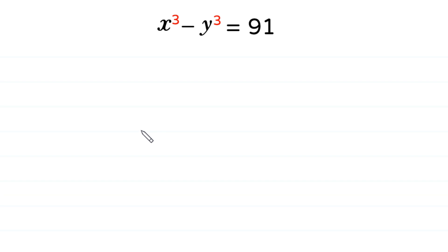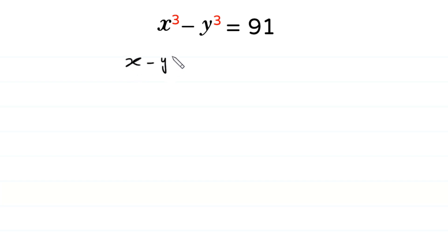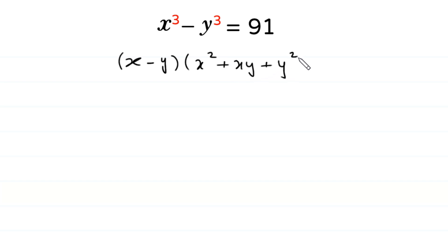Welcome to how to solve this equation for x and y. x cubed minus y cubed is equal to 91. We have a difference of two cubes here, and according to algebraic identity, x cubed minus y cubed is equal to x minus y times x squared plus x y plus y squared.